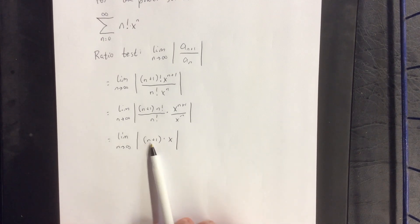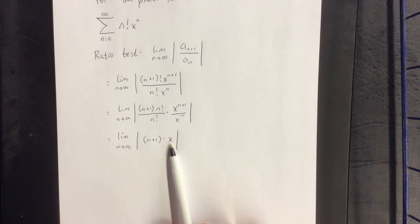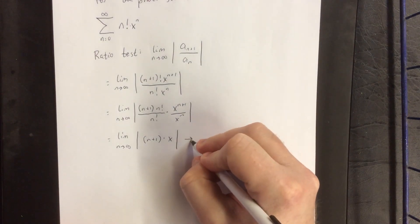Now, when we take the limit as n approaches infinity, what's going to happen is that this term will go to infinity, which means that if x is anything but exactly equal to 0, then this thing is going to diverge toward infinity.